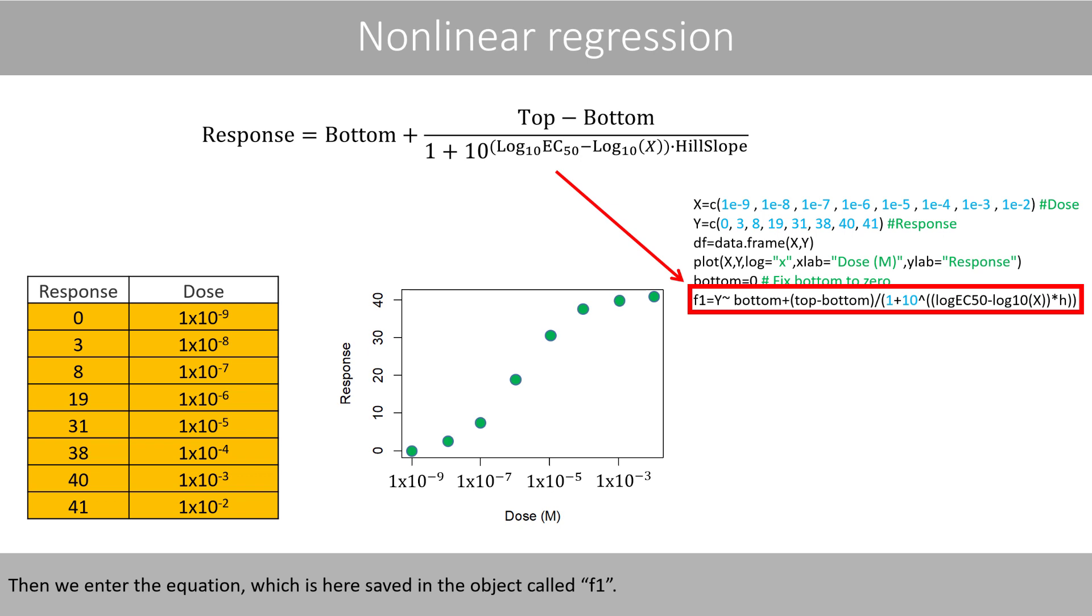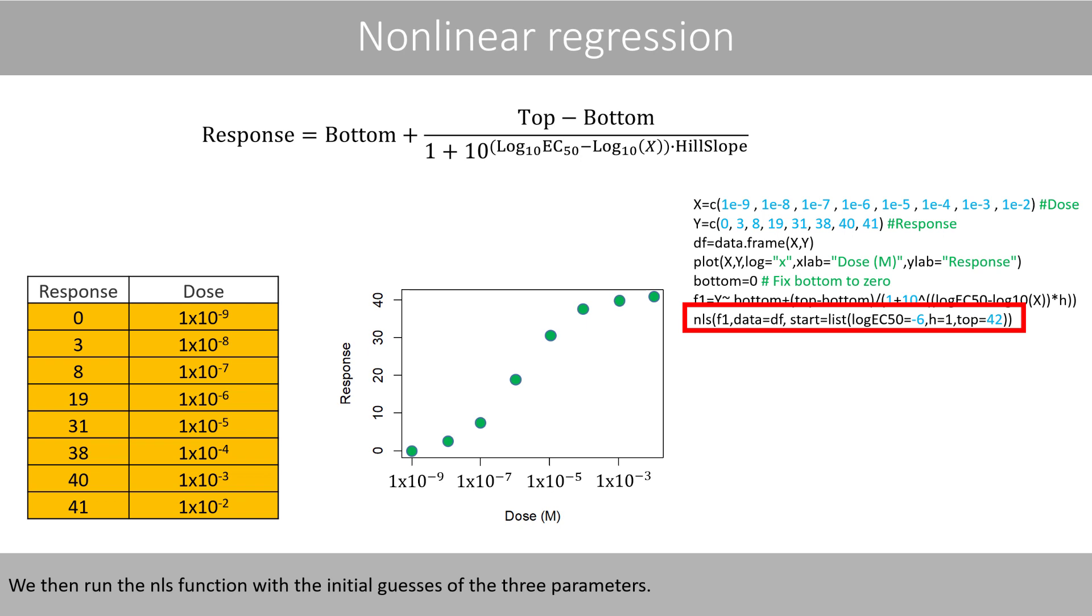Then we enter the equation, which is here saved in the object called F1. We then run the NLS function with the initial guesses of the three parameters. Note that the parameter bottom should not be included in this list, because we will here not estimate that parameter.